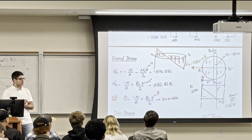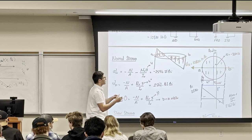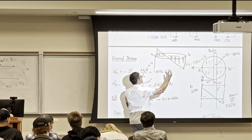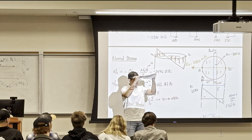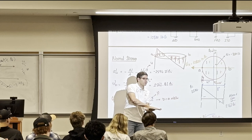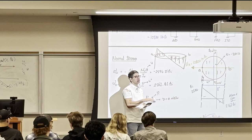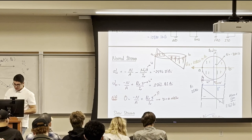The bending moment and axial force both produce normal stresses, because normal stress applies tension or compression to the cross section. Bending causes compression on one side and tension on the other — that's still normal stress. The axial force pushes or pulls — still normal stress. This is unlike shear stress, where the cross section feels a friction-like force rather than tension or compression.